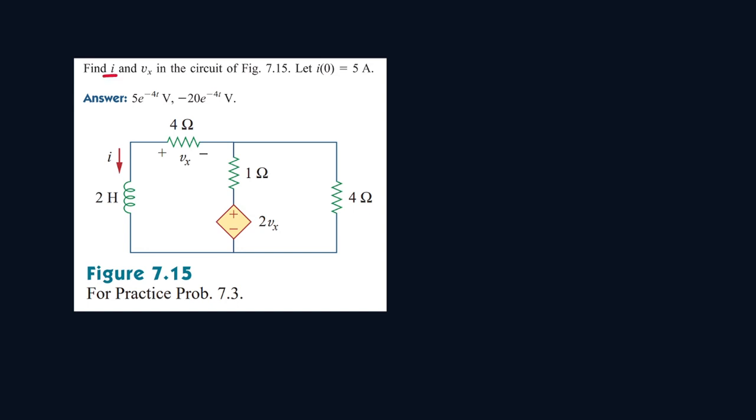Okay, so we have to solve for i and vx and find the formulas for those. We're given that when time is 0, i will be equal to 5, so i at 0 will be equal to 5 amps.